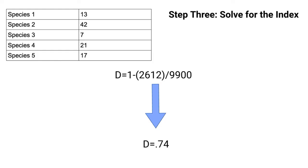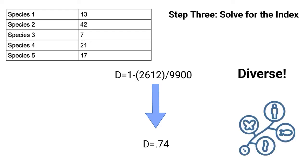Remember that the closer to one your index value is, the more diverse the population is. This means that our sample population is pretty diverse.